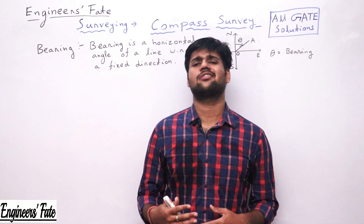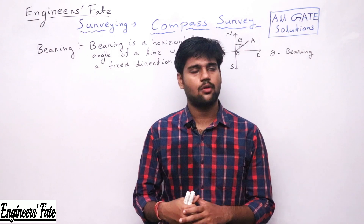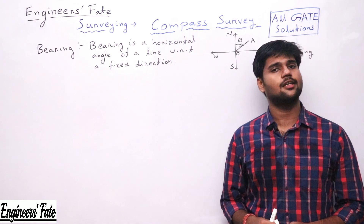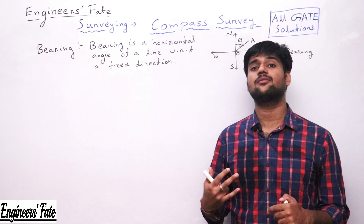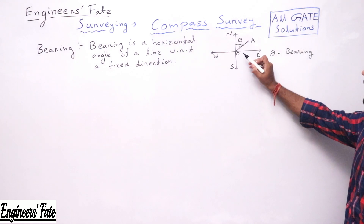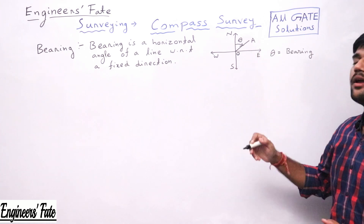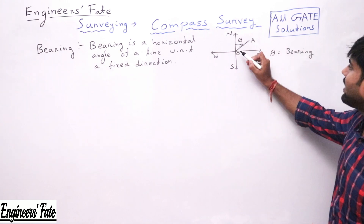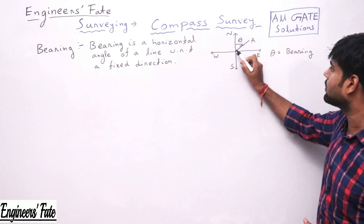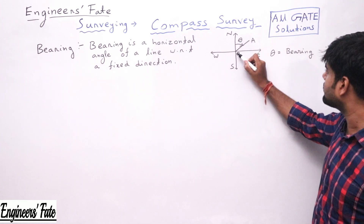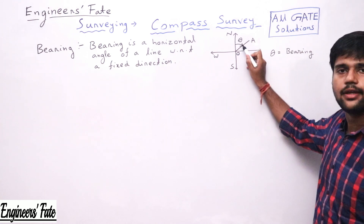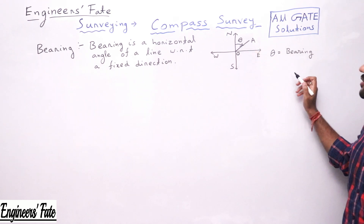Welcome to Engineers Fight. We'll discuss compass survey and all those great questions with the concepts. The first thing is: what is bearing? Bearing is the angle between a line with respect to a fixed direction or fixed reference. Suppose in the field I have measured a line OA using a chain, and I have taken the fixed direction as north. The angle from north to this line OA will be theta, and this theta is known as the bearing.